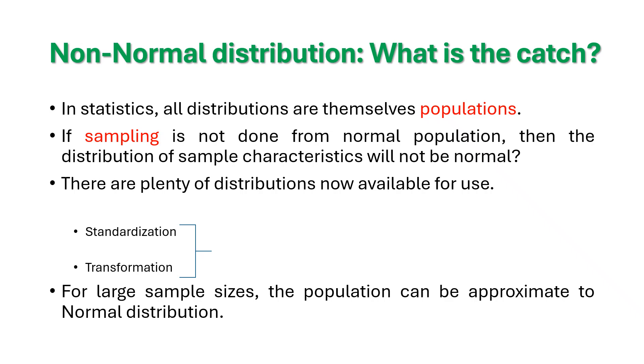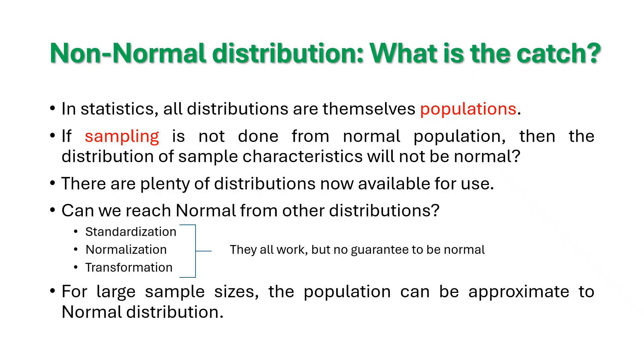In statistics, we generally call all the distributions as the populations. And if sampling is done from normal population, then the distribution of sample characteristics will be normal. But the question is, can you make it normal? There are plenty of distributions now available for use. But you can get into a normal distribution by doing some kind of activities like standardization, transformation, even normalization, all will work.